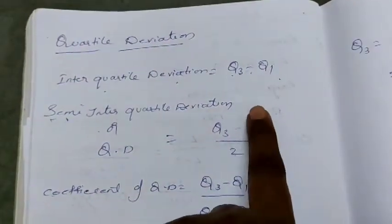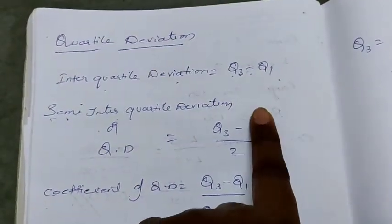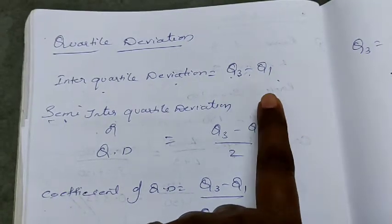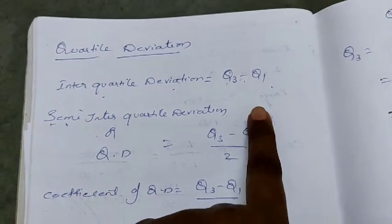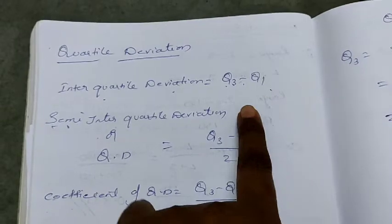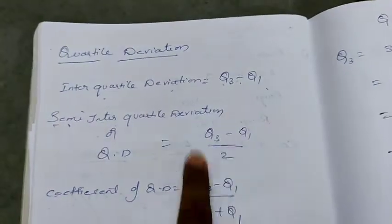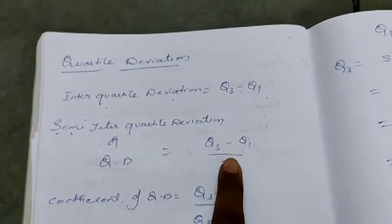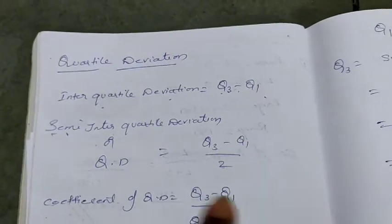So already we know how to calculate Q1 and Q3. While studying median, in the median topic itself, we have calculated Q1 and Q3 also. Again, same procedure here in case of individual series, discrete series and continuous series.